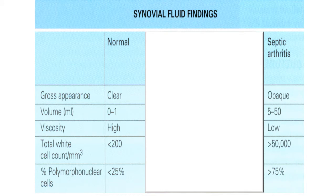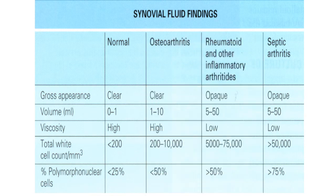Septic arthritis can be diagnosed on synovial fluid morphology. The synovial fluid becomes opaque with large volume and low viscosity. Total white cell counts may exceed 50,000, and most of these WBCs are polymorphs. Osteoarthritis and rheumatoid arthritis should be differentiated from septic arthritis.